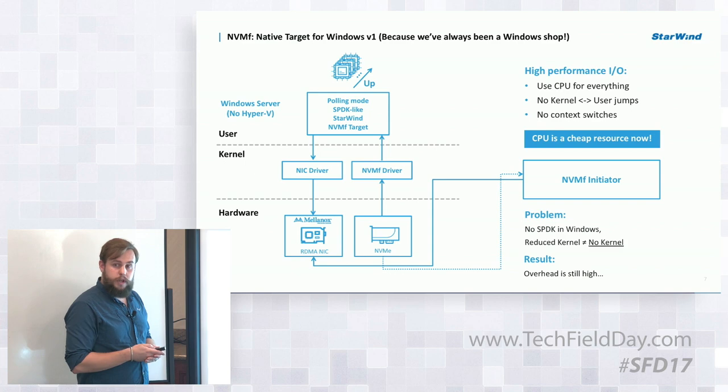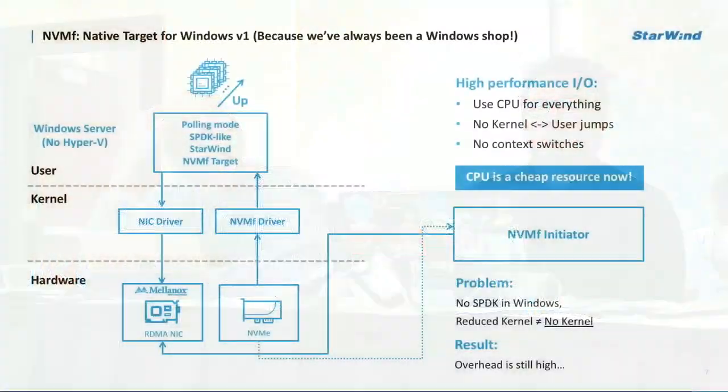Let's switch to our demo and see how the first target performed. A question came up asking whether the diagram shows the data flow from host to device and back — yes, it illustrates where kernel processing still exists in the IO flow. Let me switch to Taras, who will show you what the first target looked like. Hello, my name is Taras, I'm heading the engineering department at Starwind, and today I'll be driving demos for you.